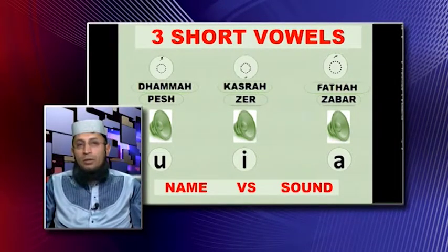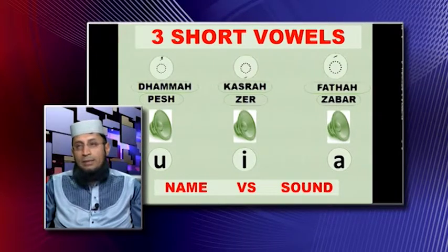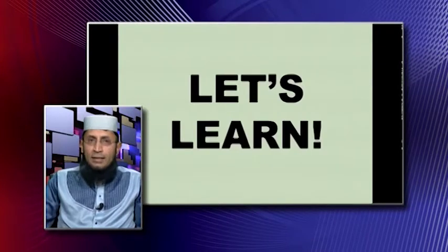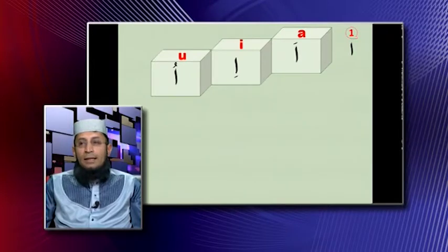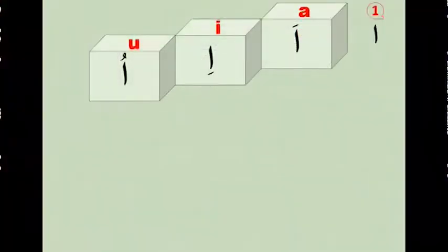These three short vowels we are going to place on those ten letters which we are learning today, or below them, and then see what sound each one of those letters gives. The first one is the letter Alif. Looking from the right-hand side, you can see A, then E, then U.